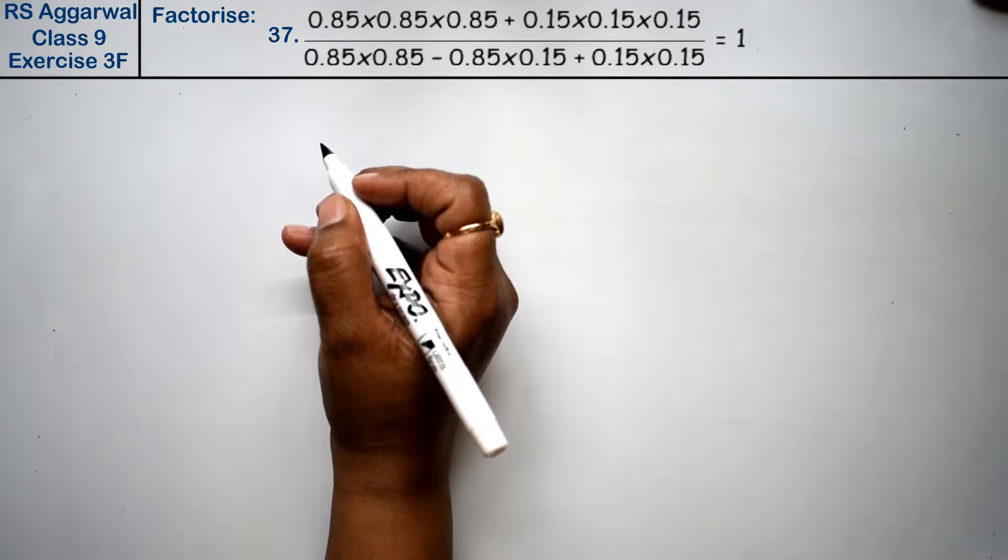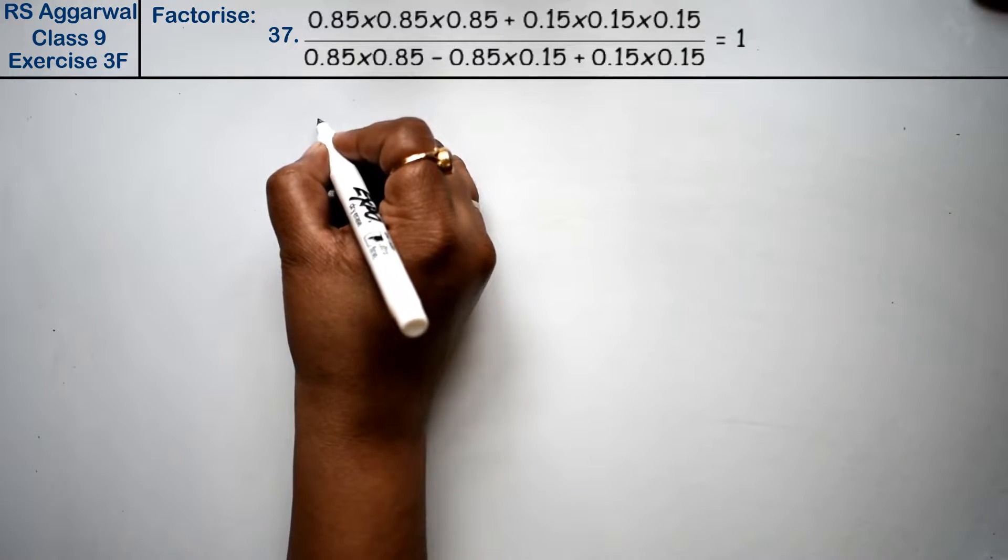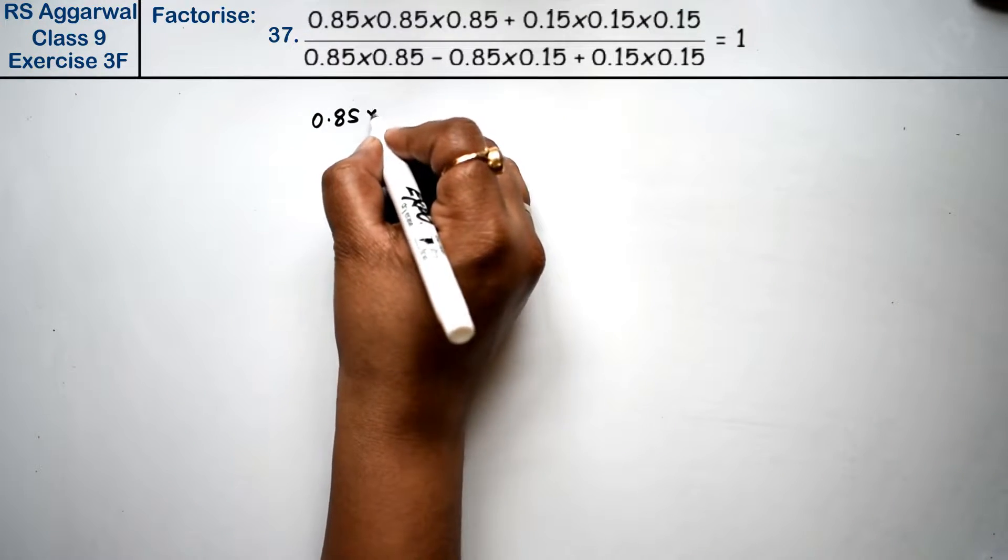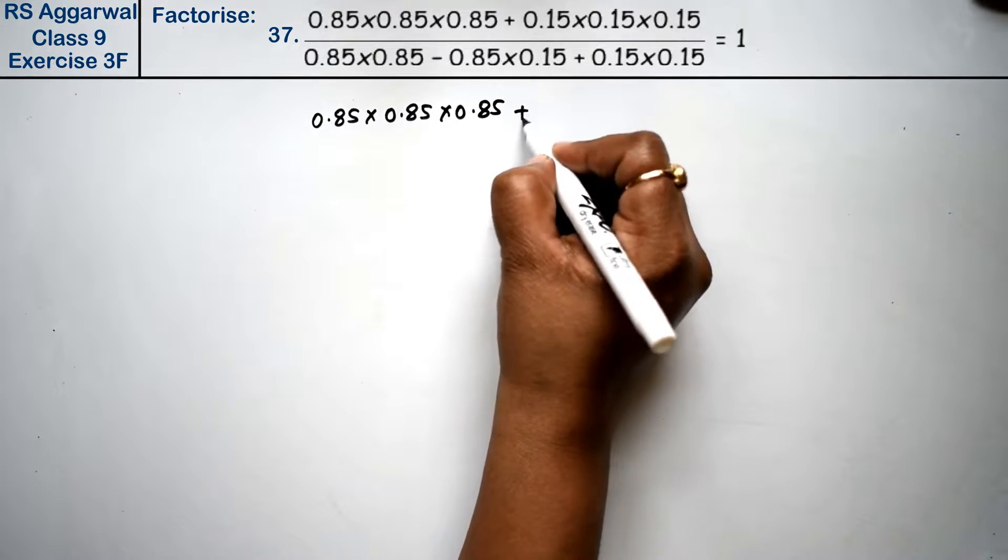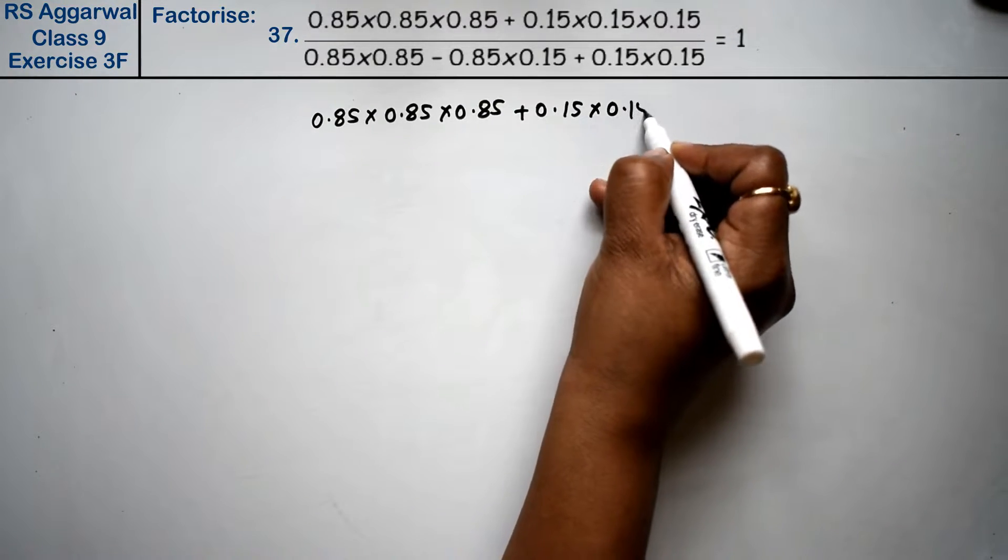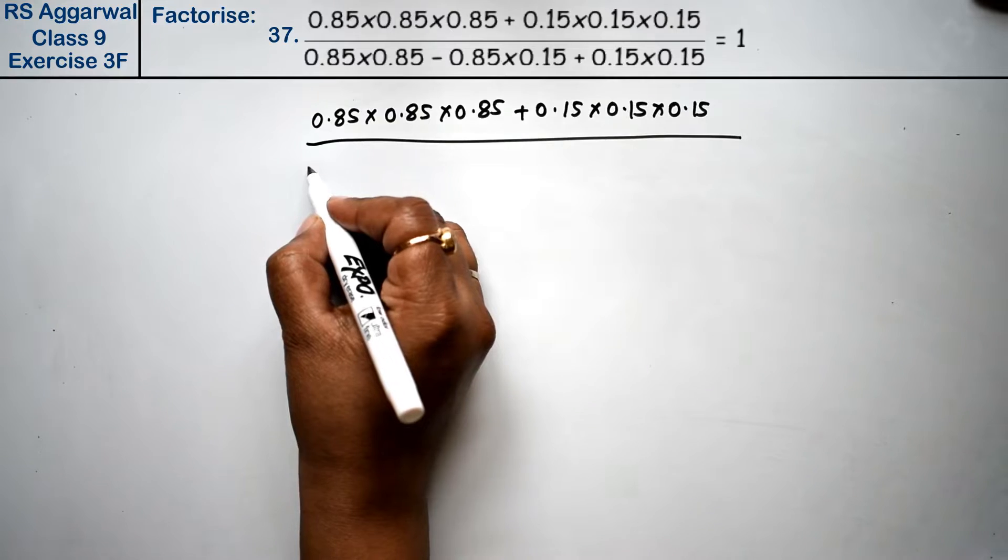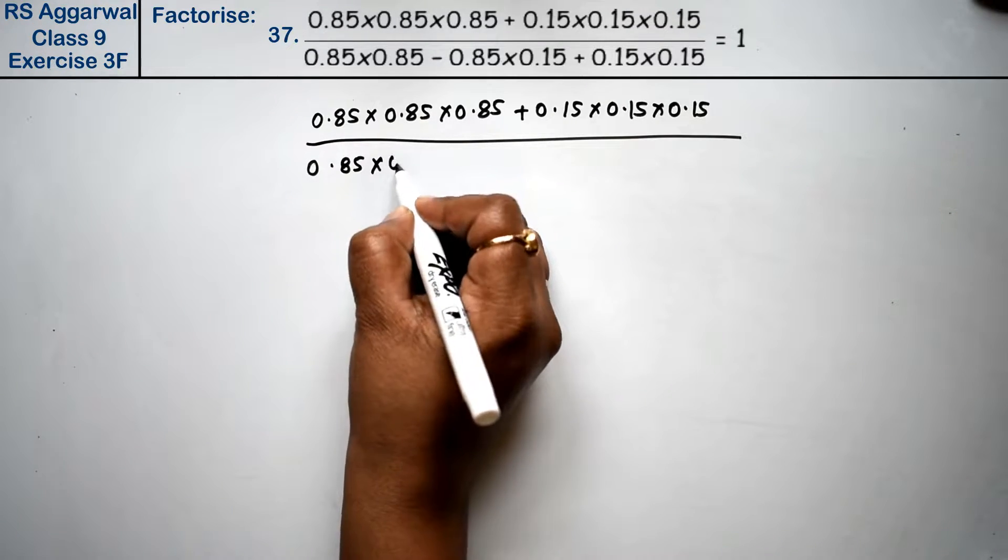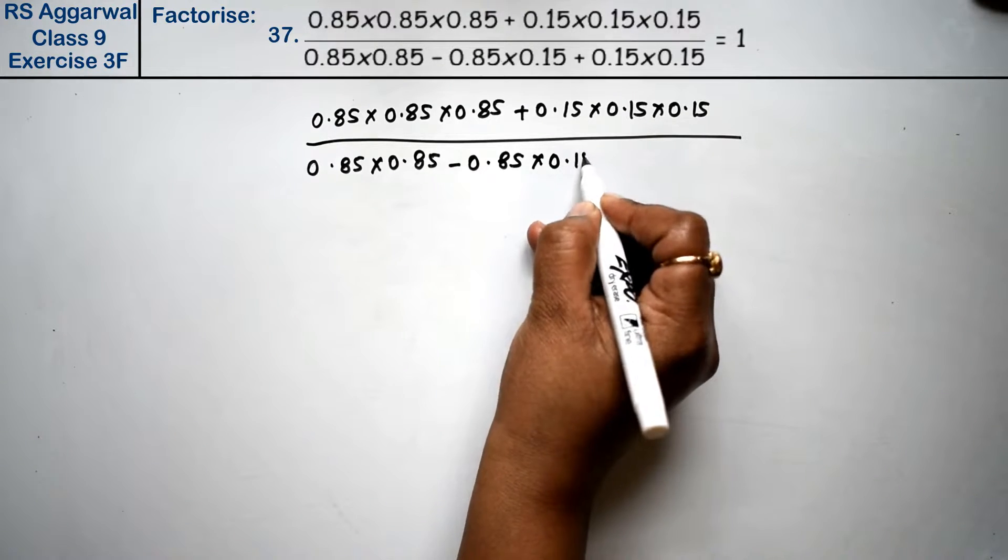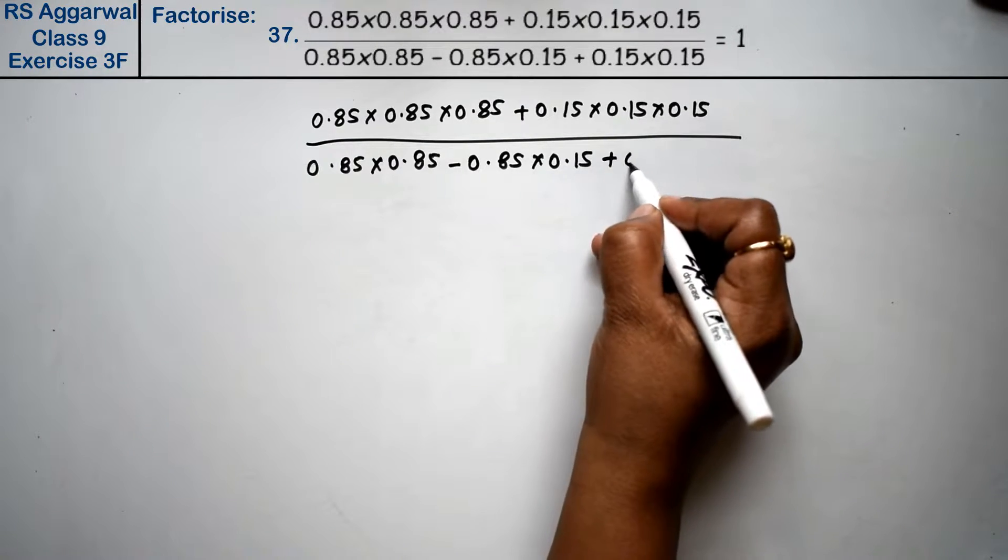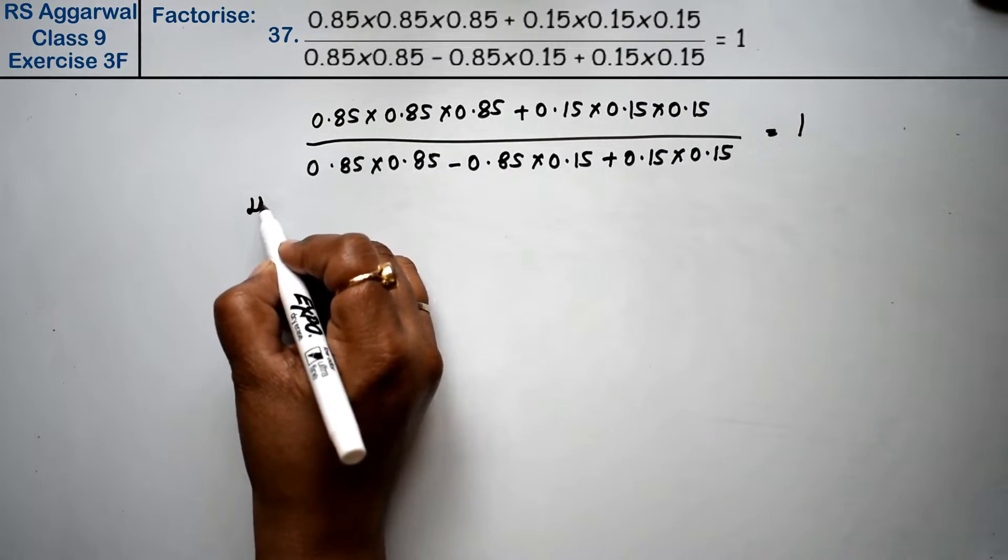Let's do question number 37 of exercise 3F, that is factorization of polynomial. Question number 37 is to prove: 0.85 × 0.85 × 0.85 + 0.15 × 0.15 × 0.15 upon 0.85 × 0.85 - 0.85 × 0.15 + 0.15 × 0.15 equals 1. Friends, we will take the left hand side.